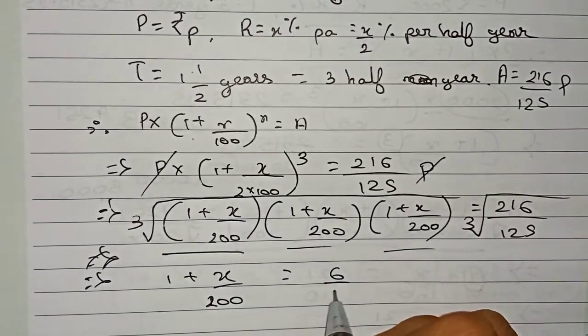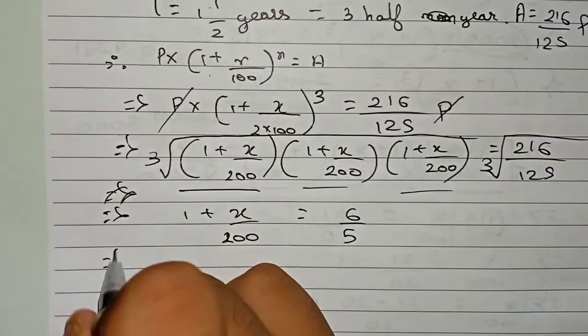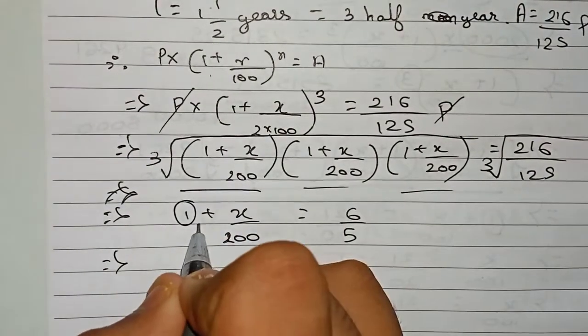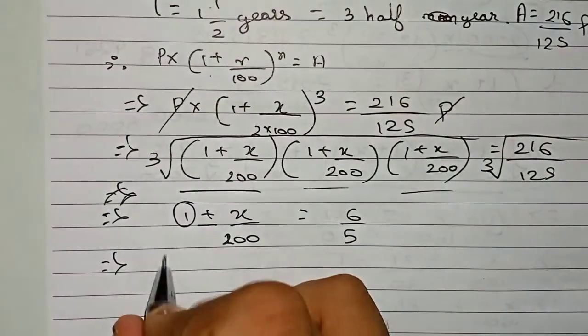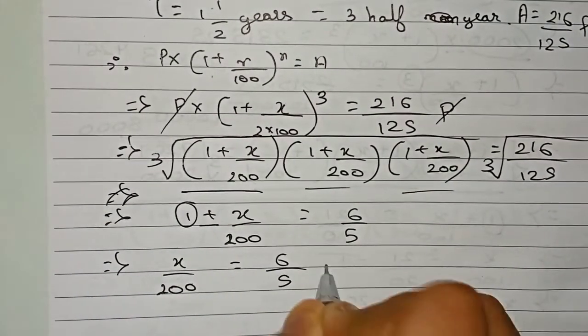Now take this one to this side. As it is in addition here, it will go for subtraction. x by 200 is equals to 6 by 5 minus 1.